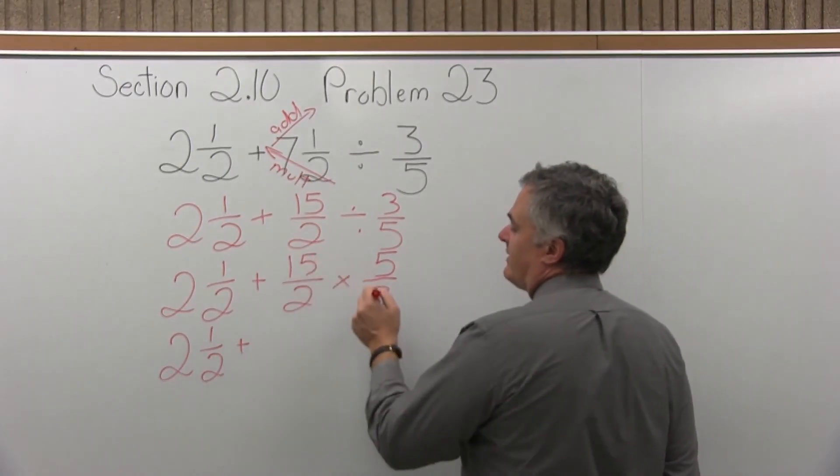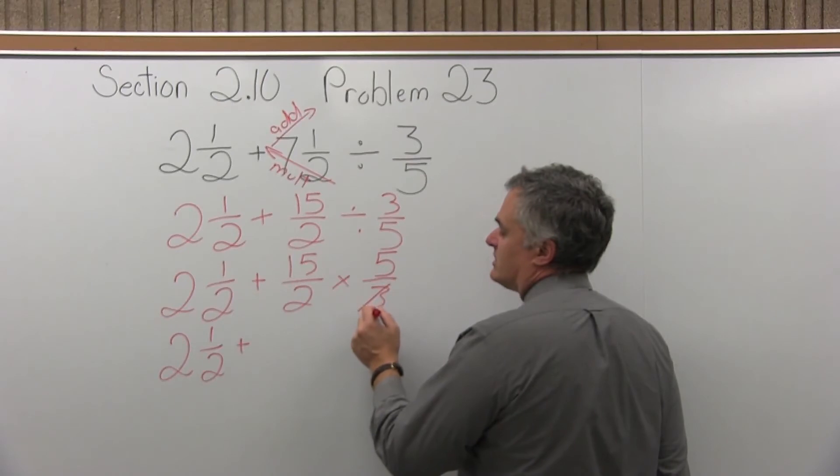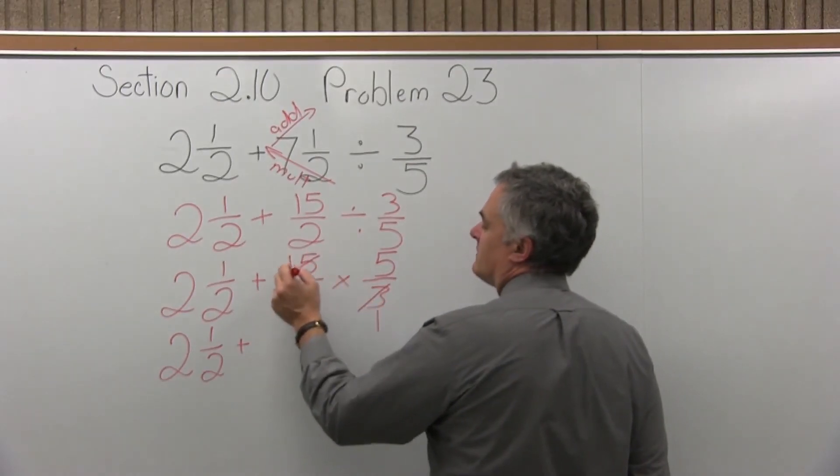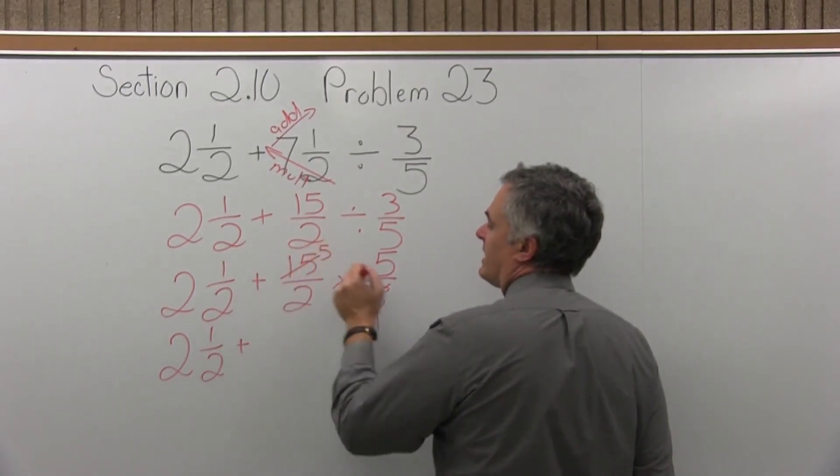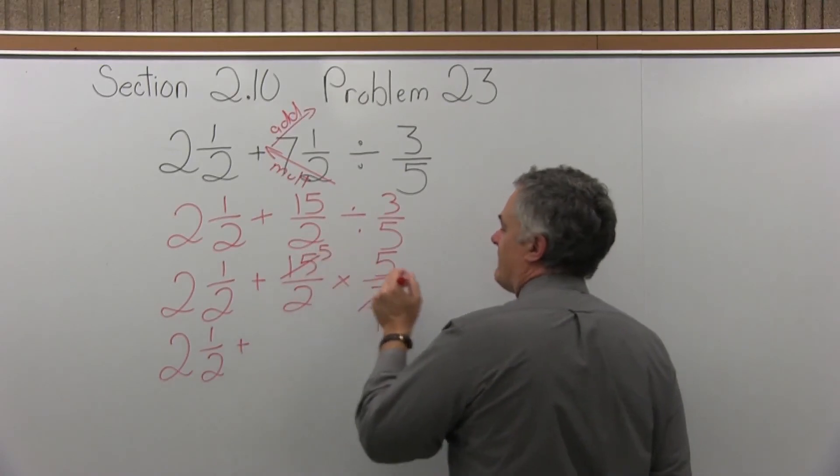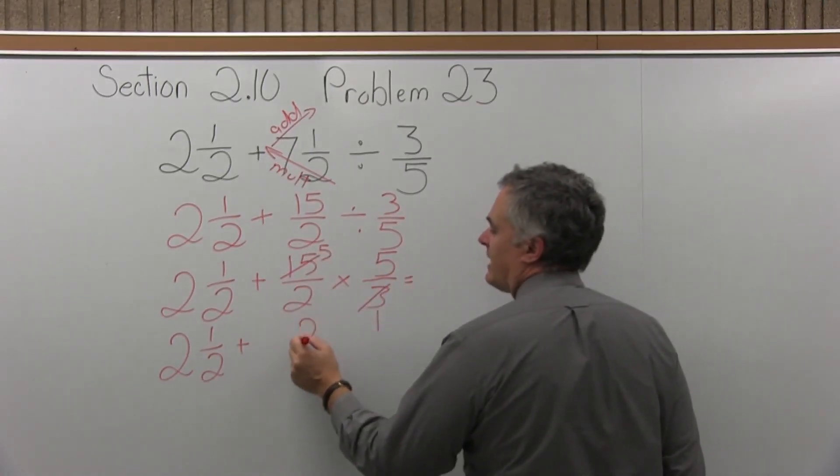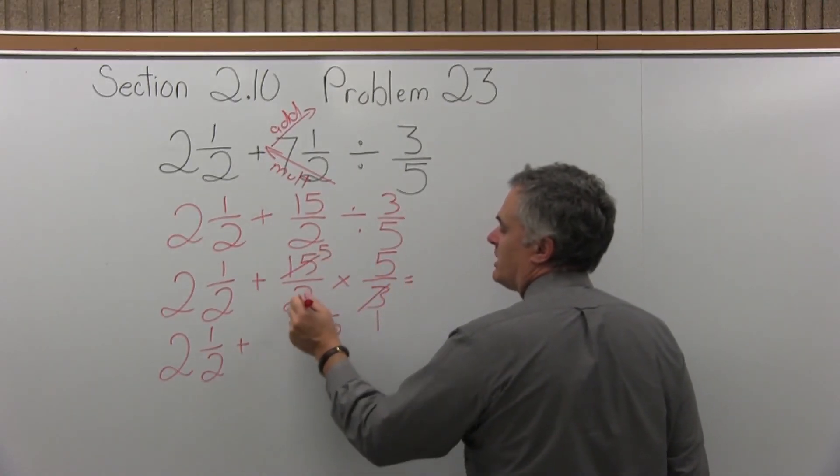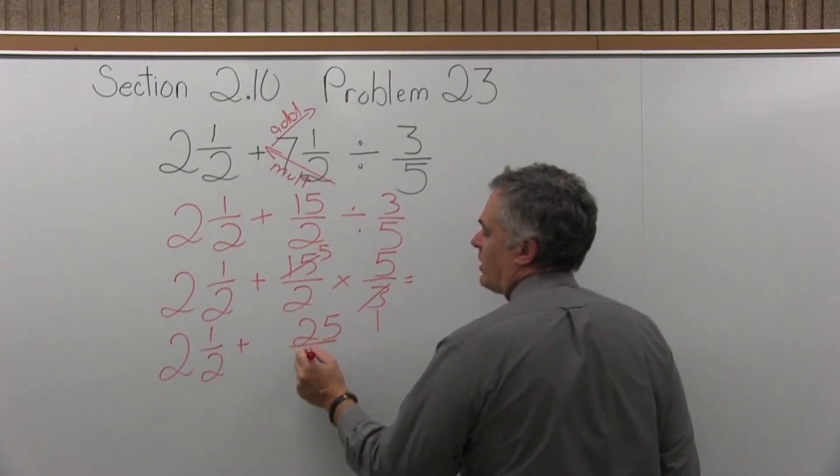The three and the fifteen reduce nicely. Three goes into three once, three goes into fifteen five times. So in the numerator I have five times five, which is twenty-five, and in the denominator two times one, which is two.